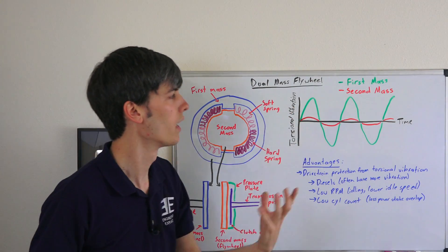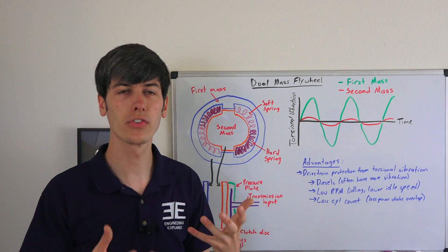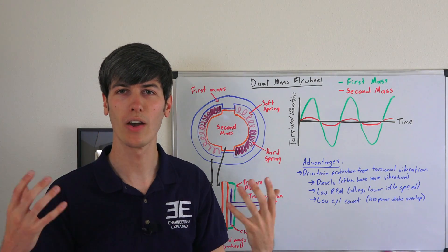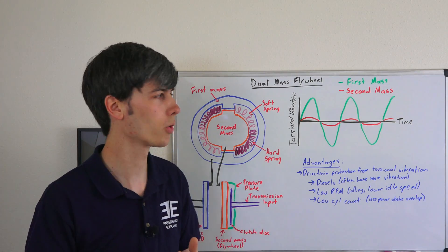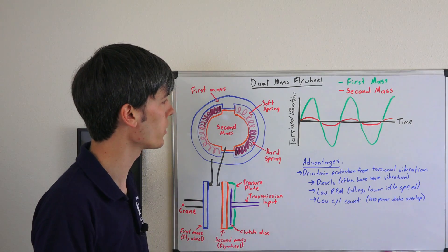If you look at the torsional vibration, engines don't have a perfectly even power delivery. You have power strokes, so if you have a four-stroke engine you're getting one power stroke for every 180 degrees of crankshaft rotation.